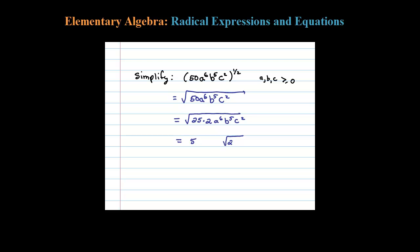Now the index here is 2, and I have a to the 6th. So the square root of a to the 6th: 2 goes into 6 three times, and that tells me I can simplify that as a to the third.